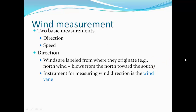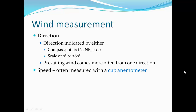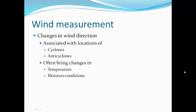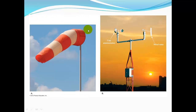Two basic measurements for wind are direction and speed. Winds are labeled from where they originate — wind coming from the north is called the north wind, going from north to south. The instrument for measuring wind direction is a wind vane. Direction is indicated by compass points or a scale of 0 to 360 degrees. Prevailing wind comes more often from one direction. Speed is often measured with a cup anemometer.